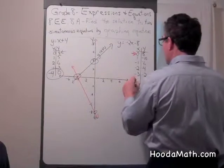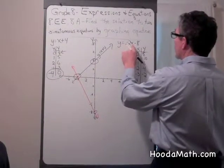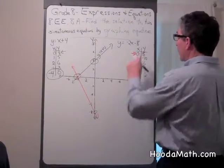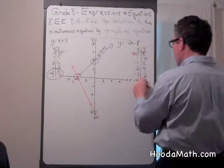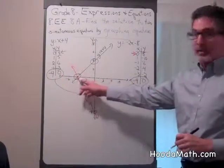If x is negative 4, negative 2 times negative 4 is positive 8 minus 8 equals 0. So we know that our solution is correct.